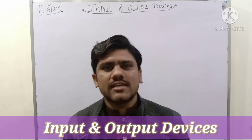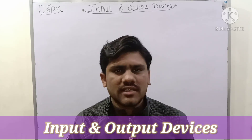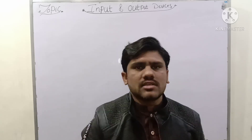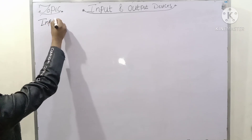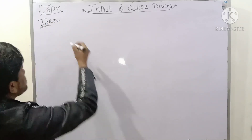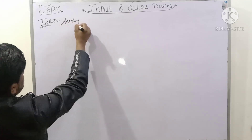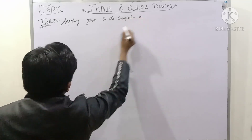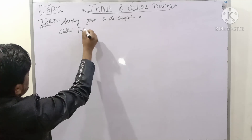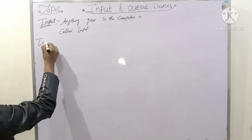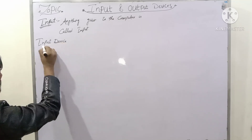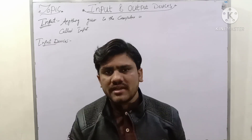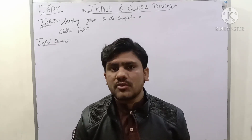Assalamu alaikum students. Today's topic is input and output devices. Firstly we will define input, then output — what is an input device and what is an output device. Input is anything given to the computer. Input devices are those devices through which data can be entered into the computer system.